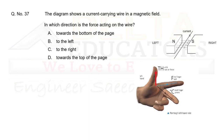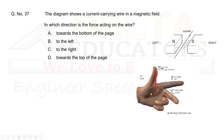Question 37: The diagram shows a current-carrying wire in a magnetic field between a north and south pole. In which direction is the force on the wire? Using Fleming's left-hand rule, the force on the wire is directed towards the bottom of the page, i.e., downward. Correct option is A.